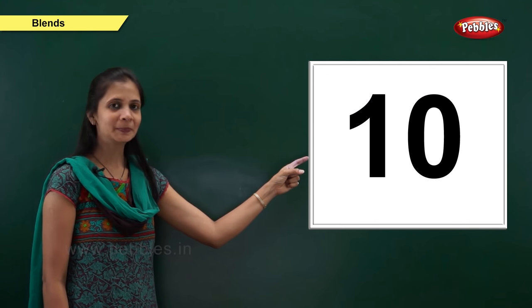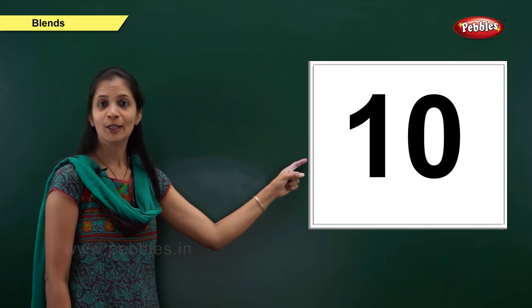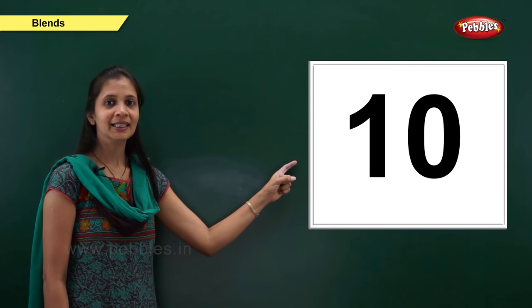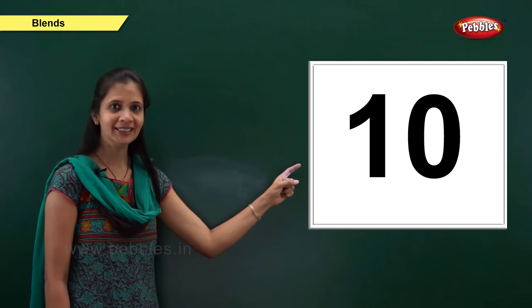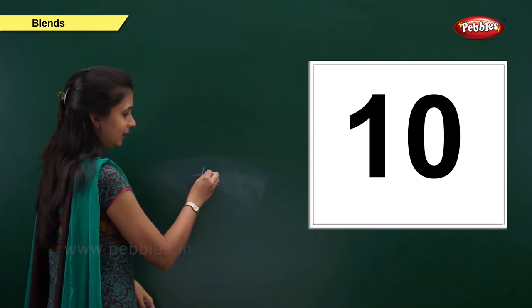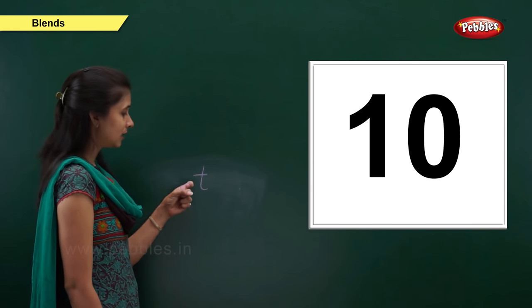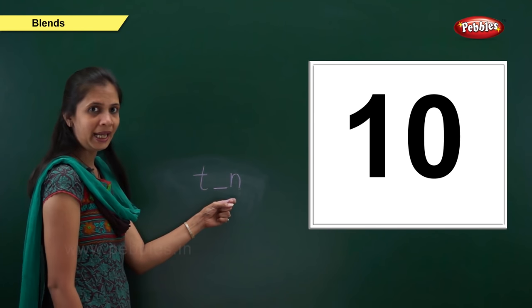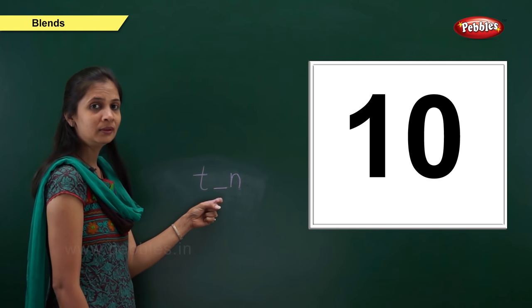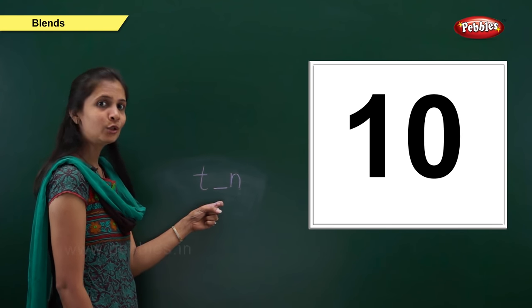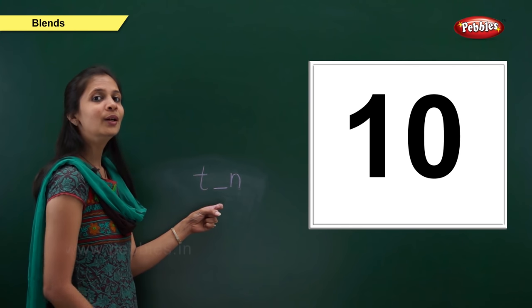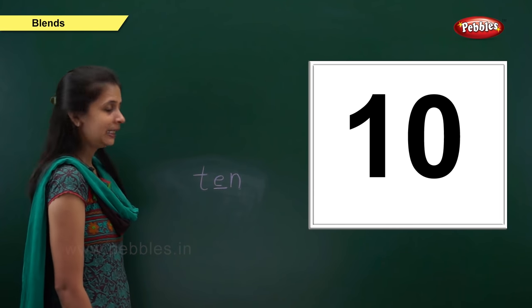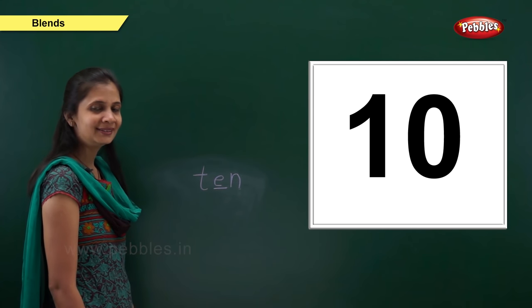Next one. Which number is this? Yes, it is ten. What is the sound of this number? It is ta, a, na. T is the beginning sound, so the letter is t. The sound is n, the letter is n. What about the middle sound? It is ta, a, na. The vowel e. T, e, n — ten.